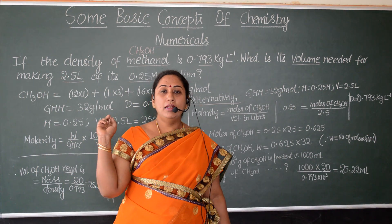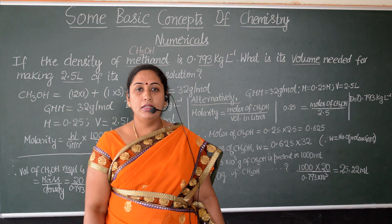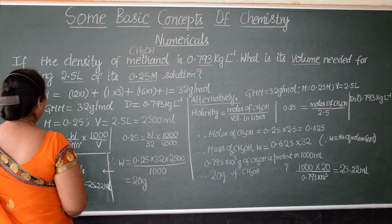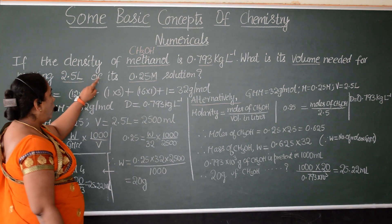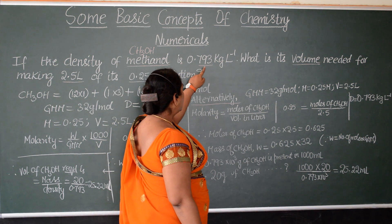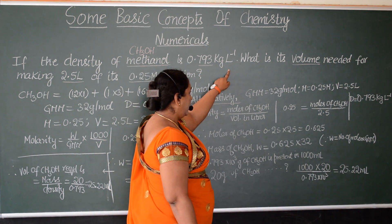Again, this numerical can be expected for two marks in the annual examination. Now, let's see the numerical. If the density of methanol is 0.793 kg per liter,